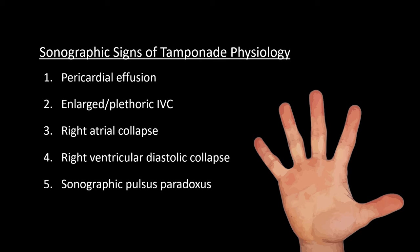Since we have observed a pericardial effusion, we now want to identify if tamponade physiology is present. There are five signs of tamponade physiology, going from least specific to most specific: first, a pericardial effusion; second, an enlarged or plethoric IVC; third, right atrial collapse; fourth, right ventricular diastolic collapse, which is highly specific; and fifth, in the right setting, sonographic pulsus paradoxus will cinch the diagnosis.